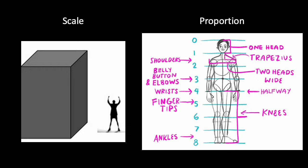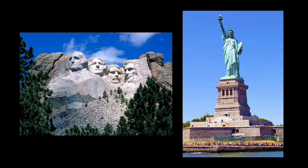Scale — the relative size of an object or work in relation to another or to a certain system of measurement — can be used to communicate various meanings or ideas. Works of art can be large scale or monumental, meaning they're massive, impressive, larger than life. Large scale can indicate grandeur, maybe wealth or status, or heroism. So we have things like Mount Rushmore or the Statue of Liberty.